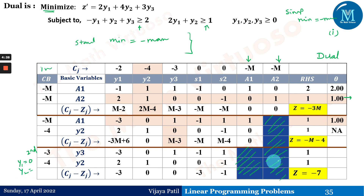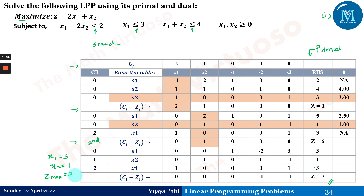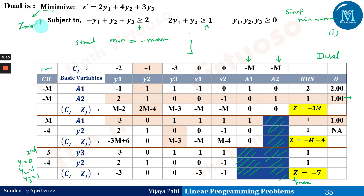At the final second iteration, y1 equals 0 (not in the basis), y2 equals 1, and y3 equals 1. The z_max from the dual table is minus 7, but since we are dealing with minimization, z_min equals 7 — the same answer as the primal. So z_max for the primal equals 7 and z_min for the dual also equals 7; the objective function value is the same due to duality.